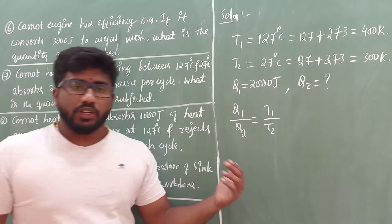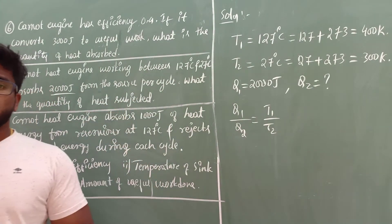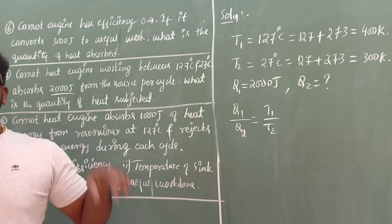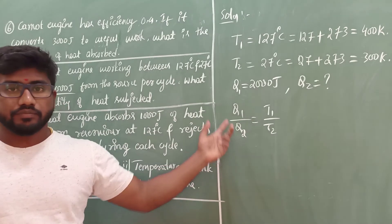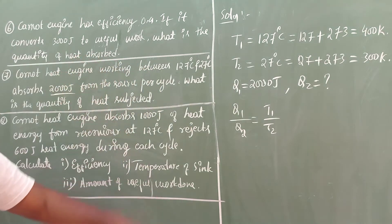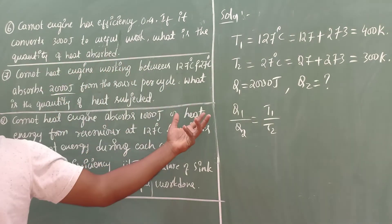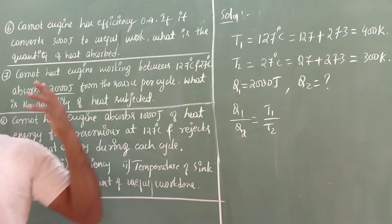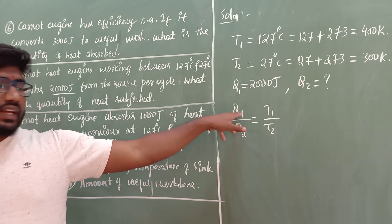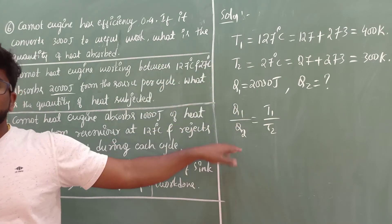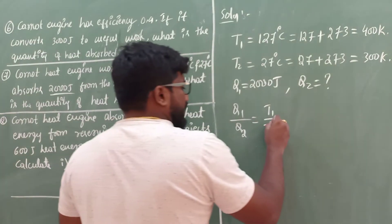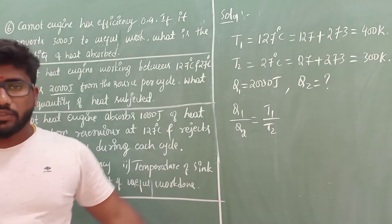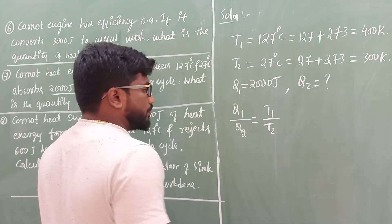We use this formula because the temperatures of source and sink are known, and we need to find Q2. In a previous problem we found the ratio of temperatures when heat values were given; here the situation is reversed — temperatures are known, Q1 is known, and we need Q2.